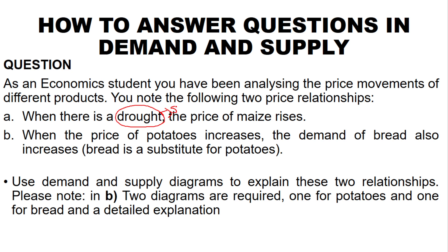The producer of maize will obviously be affected. When there's drought, the price of maize rises. We are going to draw a demand and supply curve as asked, but we are only going to change the supply curve because that's what is influenced in our scenario. Drought is a determinant of supply. When there's drought, producers will not be able to produce more, and they will increase their prices to cater for the demand.